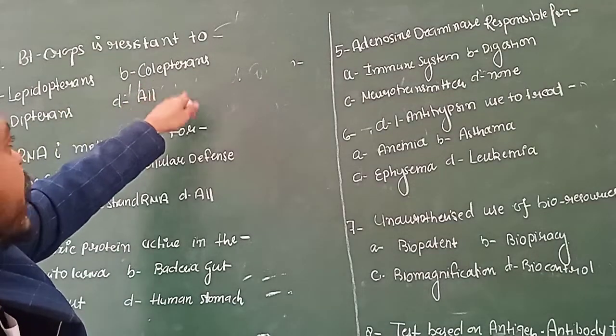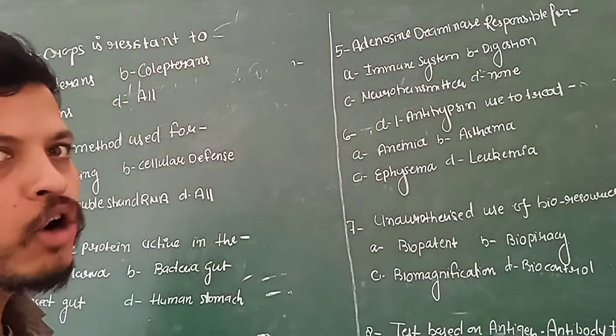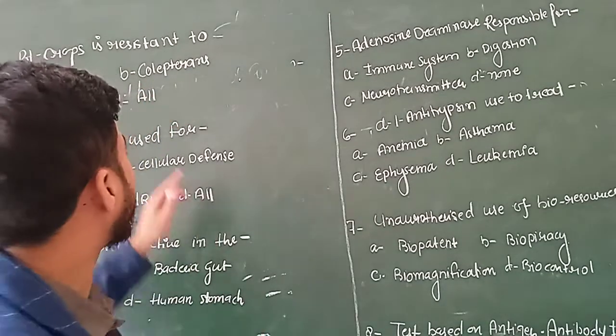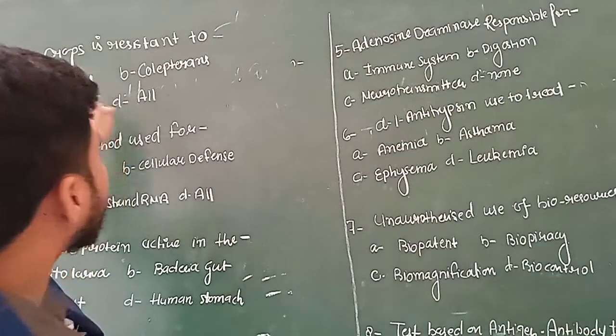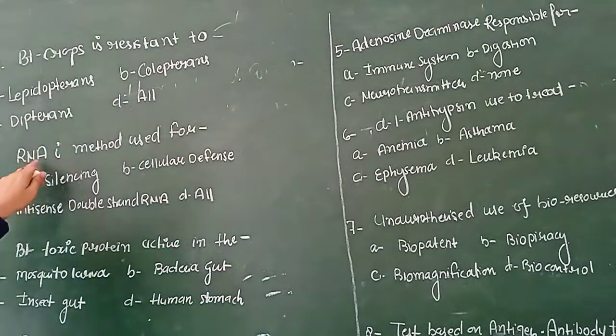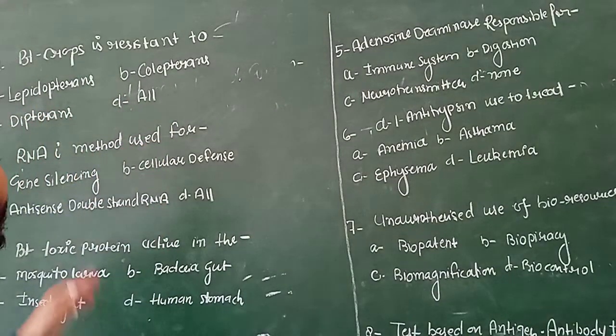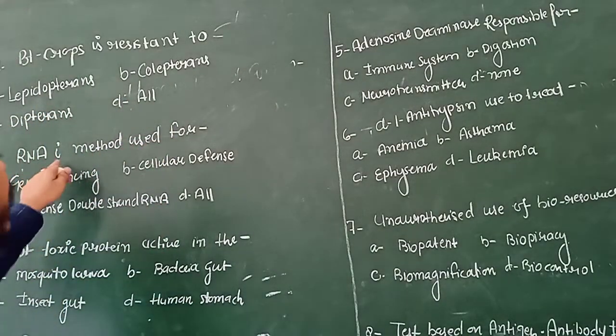Lepidopterans include insects like armyworm. Coleopterans include beetles. Dipterans include flies and houseflies. So the correct answer is 'all'.